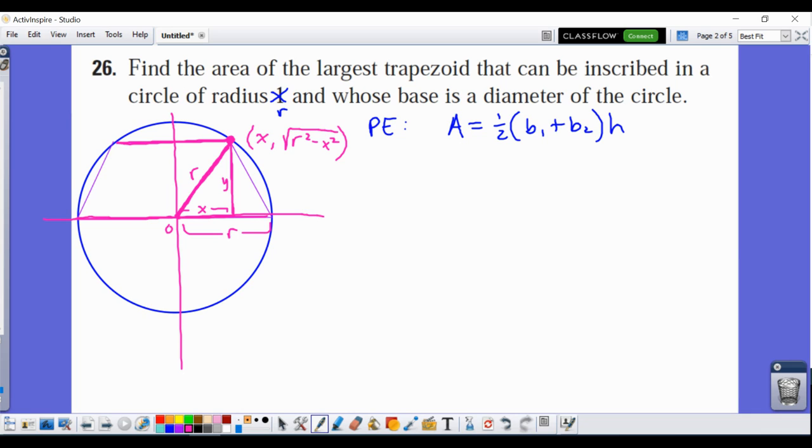Alright, I'm going to go ahead and go forth with the solution here. So again, base 1 here is actually 2r, right? Because here's r and here's r.